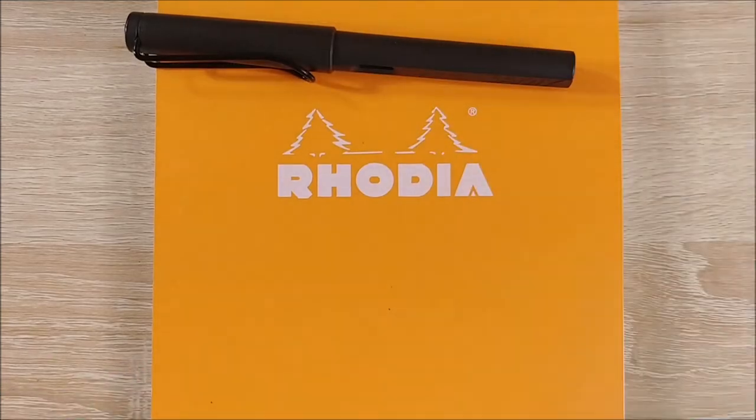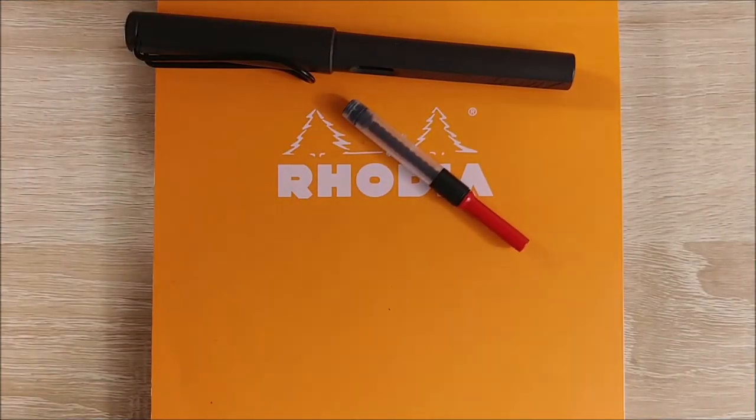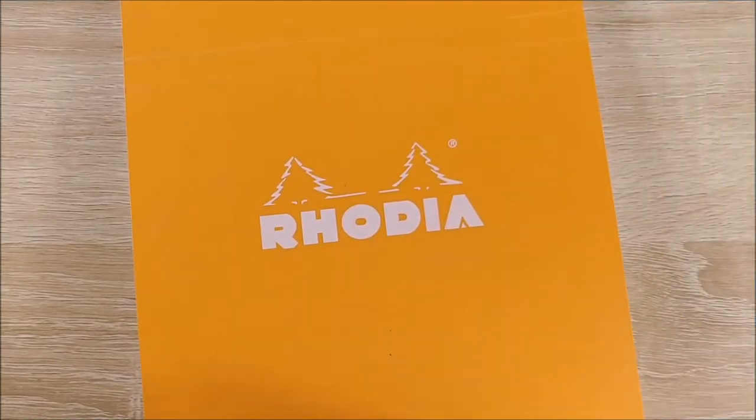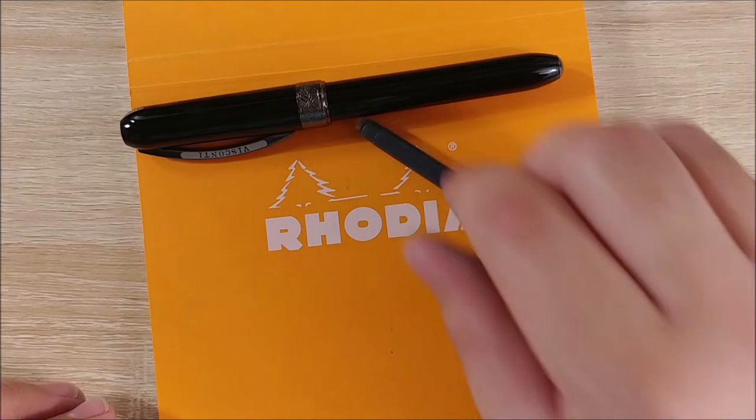So, to get started, you're going to need paper, a pen, a converter, and an ink bottle if you're going to be using bottled ink. If you just want to use a cartridge, you need paper, a pen, and your ink cartridge. Pretty simple, right?